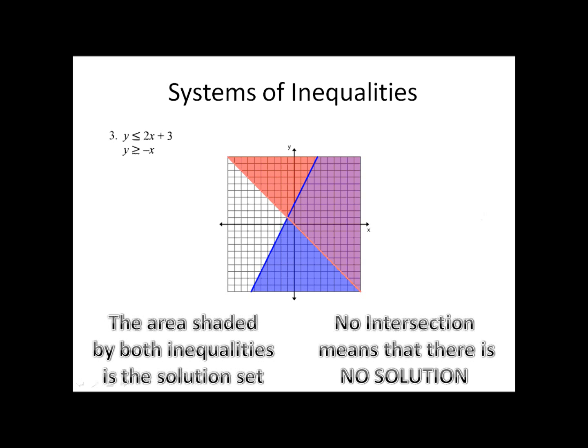Then I graphed the line y is greater than or equal to negative x, and I did that in red. Now I look for the area shaded by both colors. Do you see an area that is shaded by both colors? Well, here it's the purple one. The purple area is the solution set to the system of inequalities. Pick any value in there, and it will make both equations true at the same time.